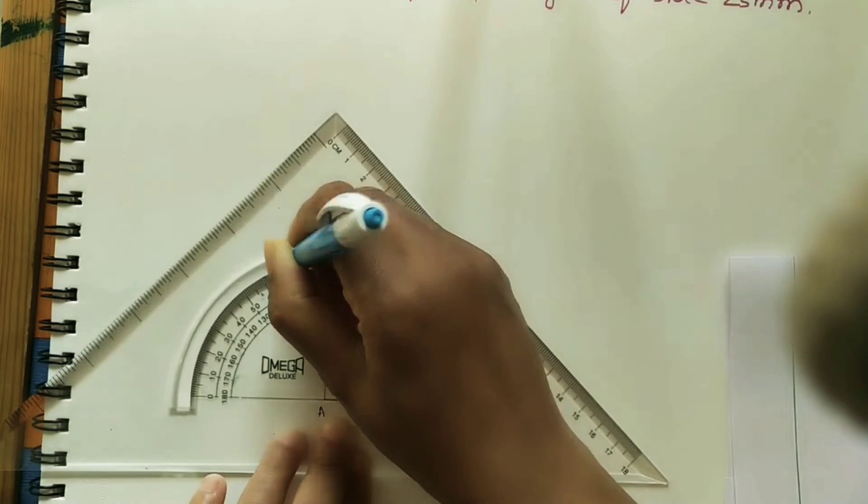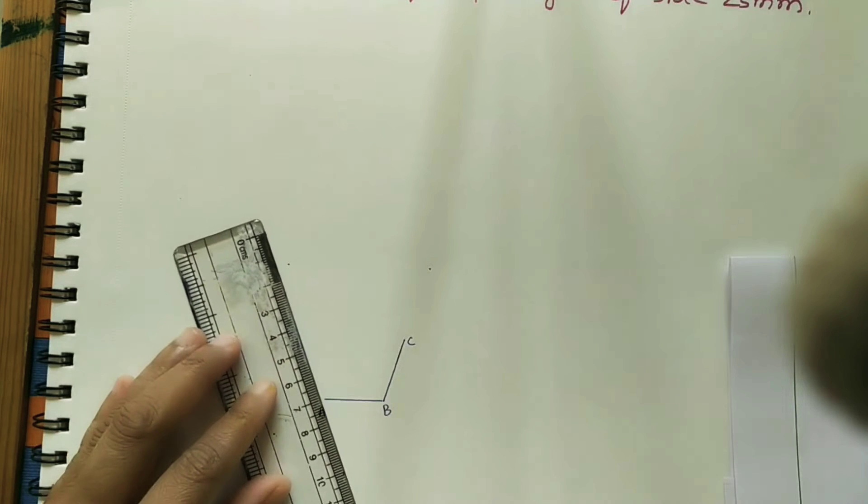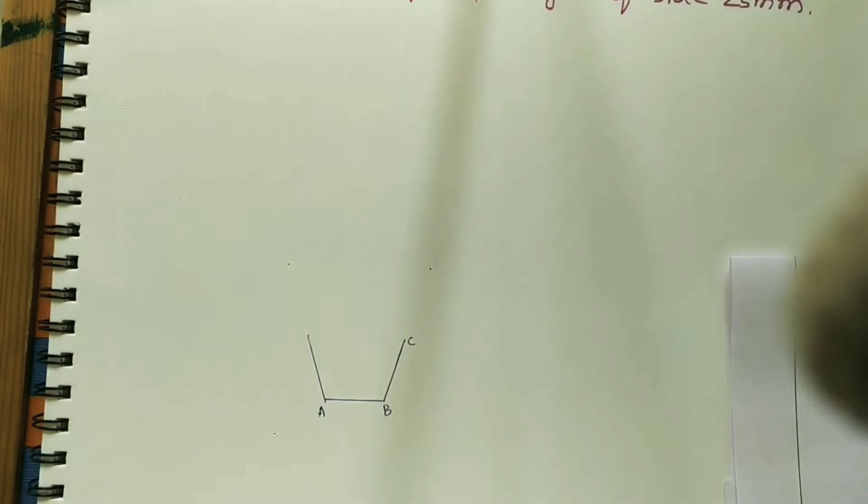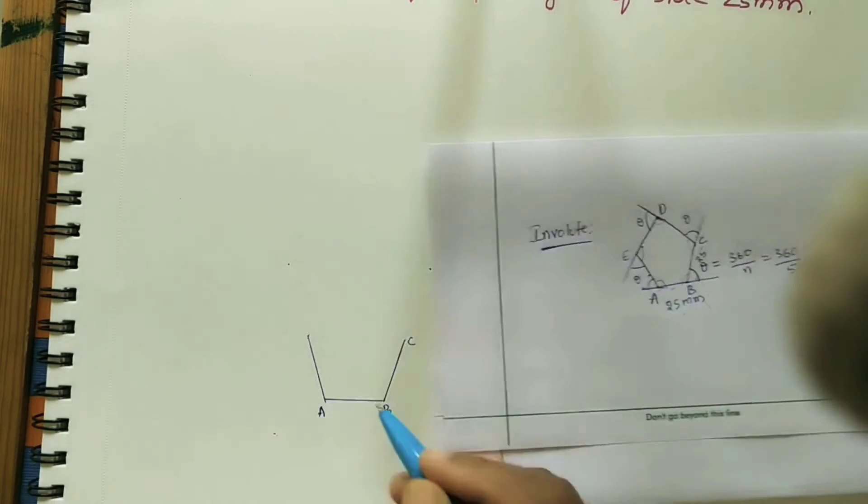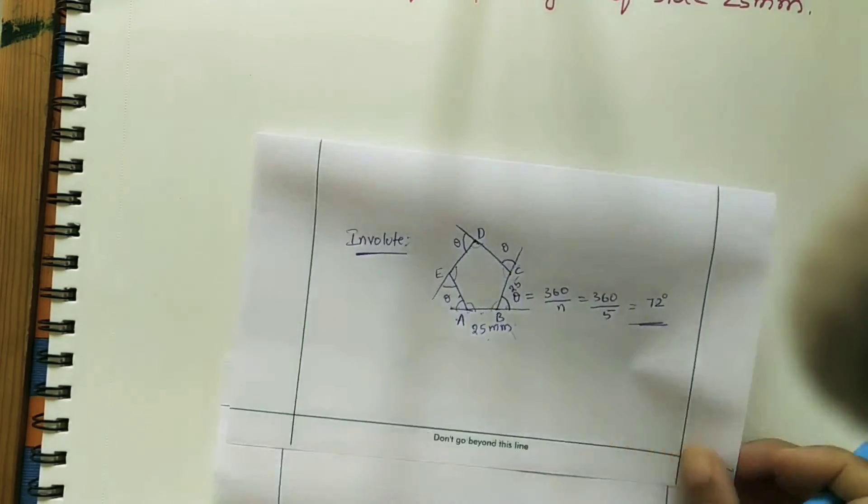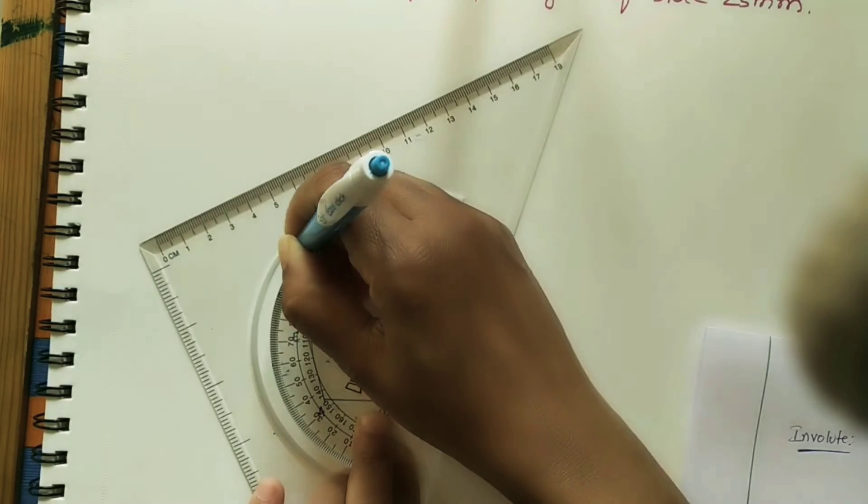That is 72. Take 72 here from this side. In this direction, take 25mm. Mark the end, that is E. Here take outer angle 72mm. Take 72mm at C.